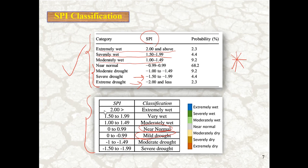You can also see the probability of drought events for each category, but I will show and describe more about probability in the next video.